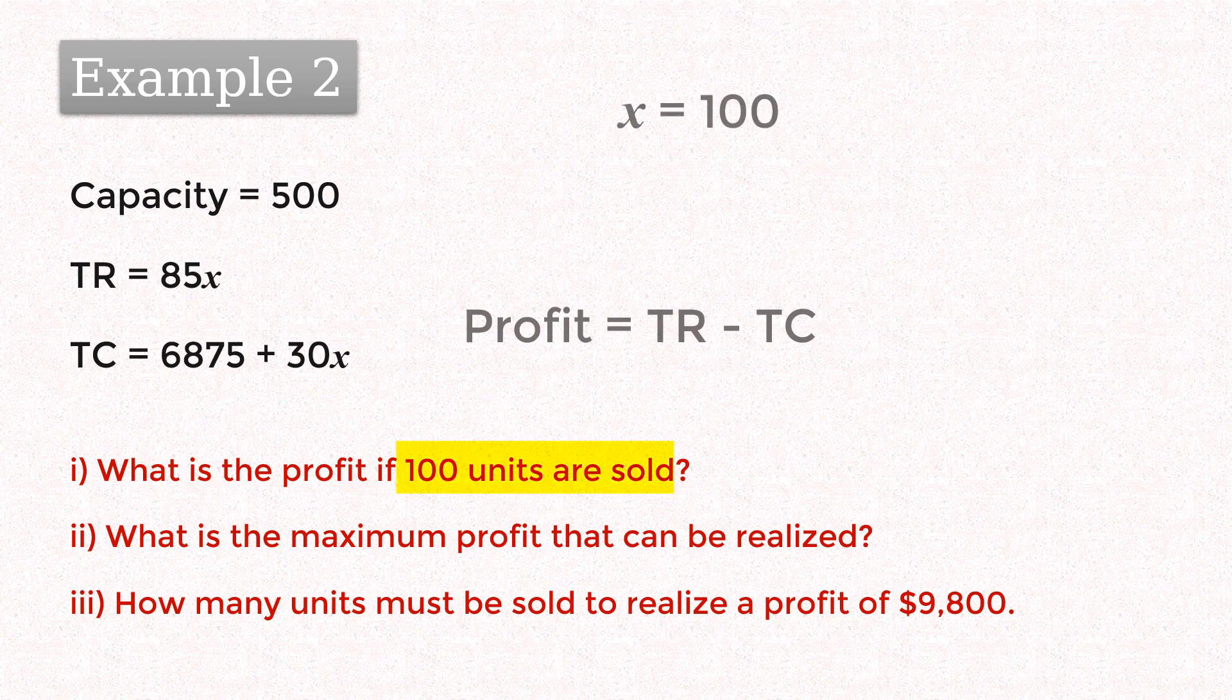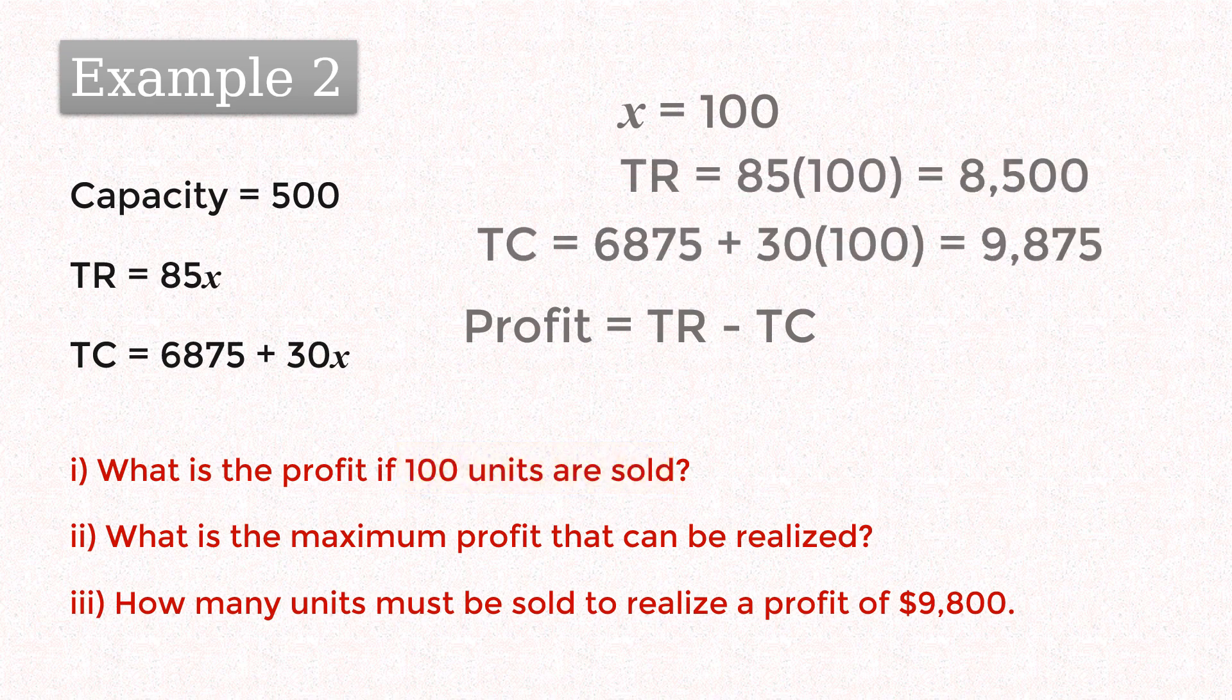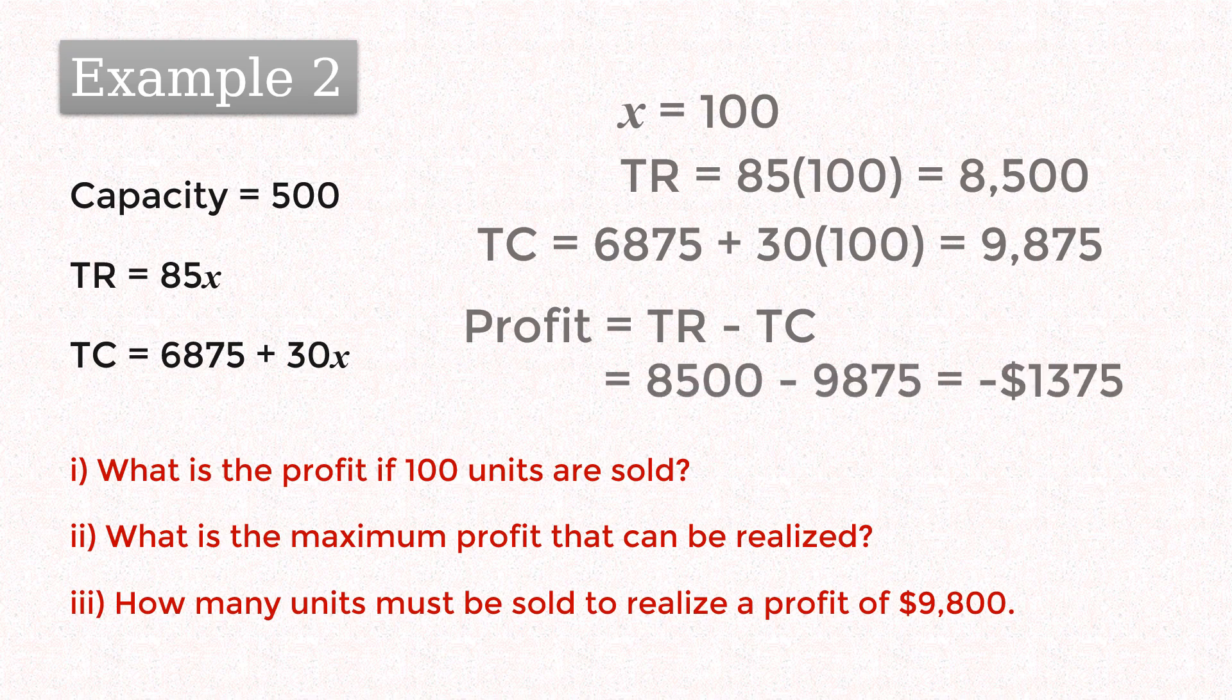So if 100 units are sold, total revenue will be $8500 and total cost will be $9875. Since total cost is greater than total revenue, operating profit will actually be a loss of $1375.